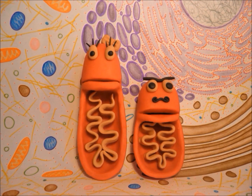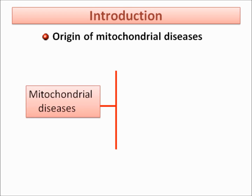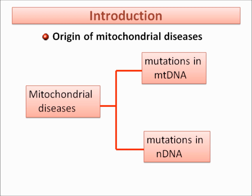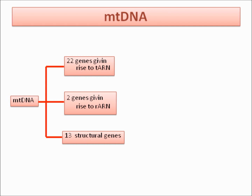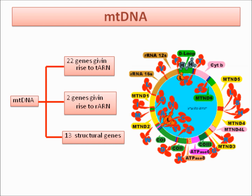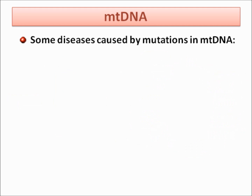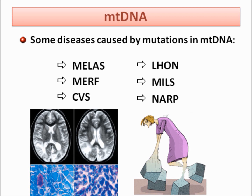So, why do we get ill? Mitochondrial illnesses can be caused by mutations in mitochondrial DNA or nuclear DNA. Focusing on mutations in mitochondrial DNA: 22 of our genes encode transfer RNA, two genes encode ribosomal RNA, and we have 13 structural genes that encode proteins. As these genes are responsible for the synthesis of ATP, mutations can cause diseases related to energy deficiency, especially in the brain and muscles.